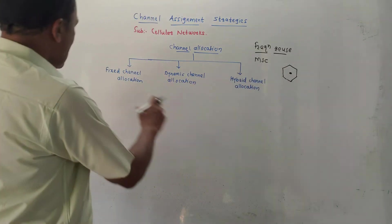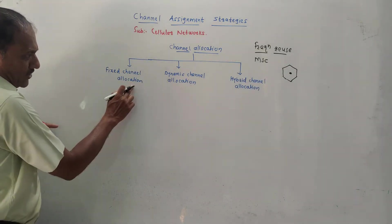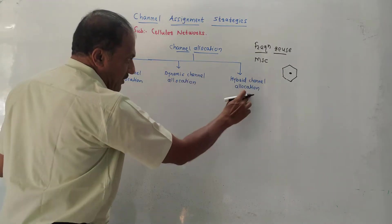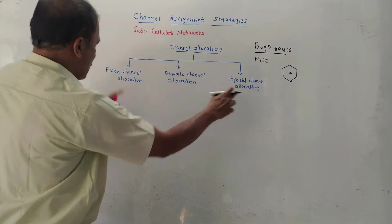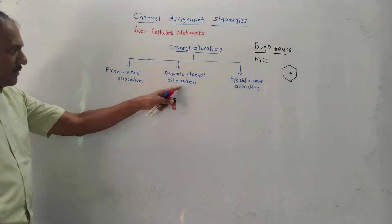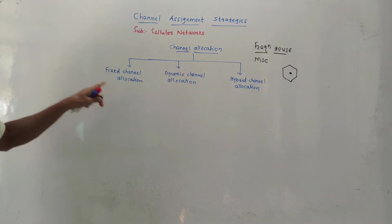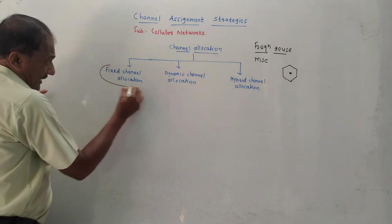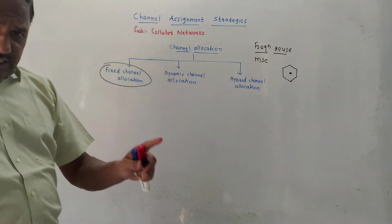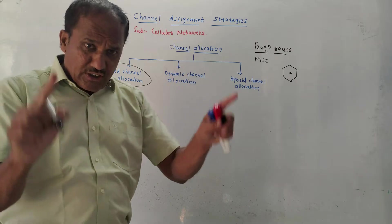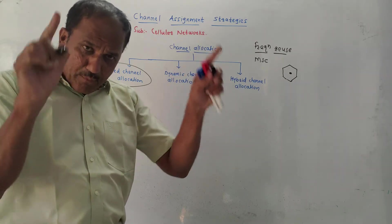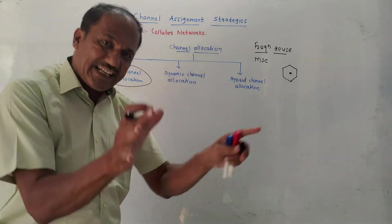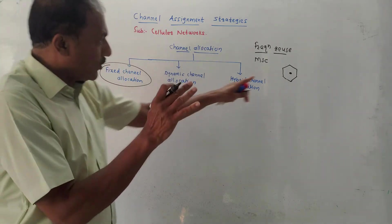There are three types of channel allocation techniques: first, fixed channel allocation; second, dynamic channel allocation; and third, hybrid channel allocation, which is a combination of fixed and dynamic. In fixed channel allocation, as the name indicates, a fixed number of channels or frequencies are assigned to each particular cell.